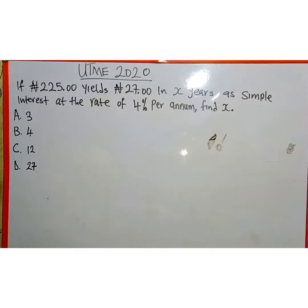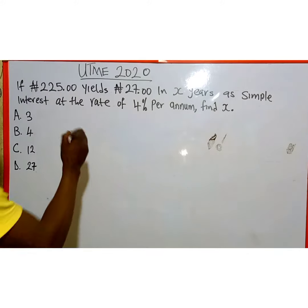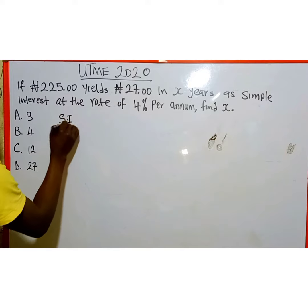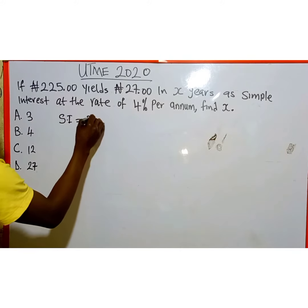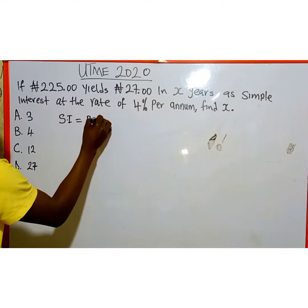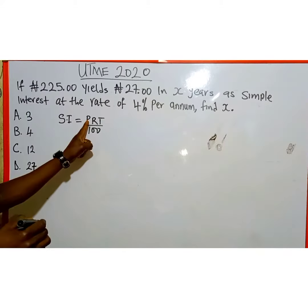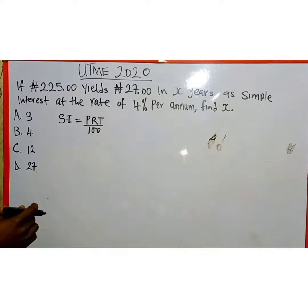This question is on simple interest. Remember the formula to calculate simple interest: SI equals P multiplied by R multiplied by T over 100, where P is the principal, R is the rate, and T is the time.